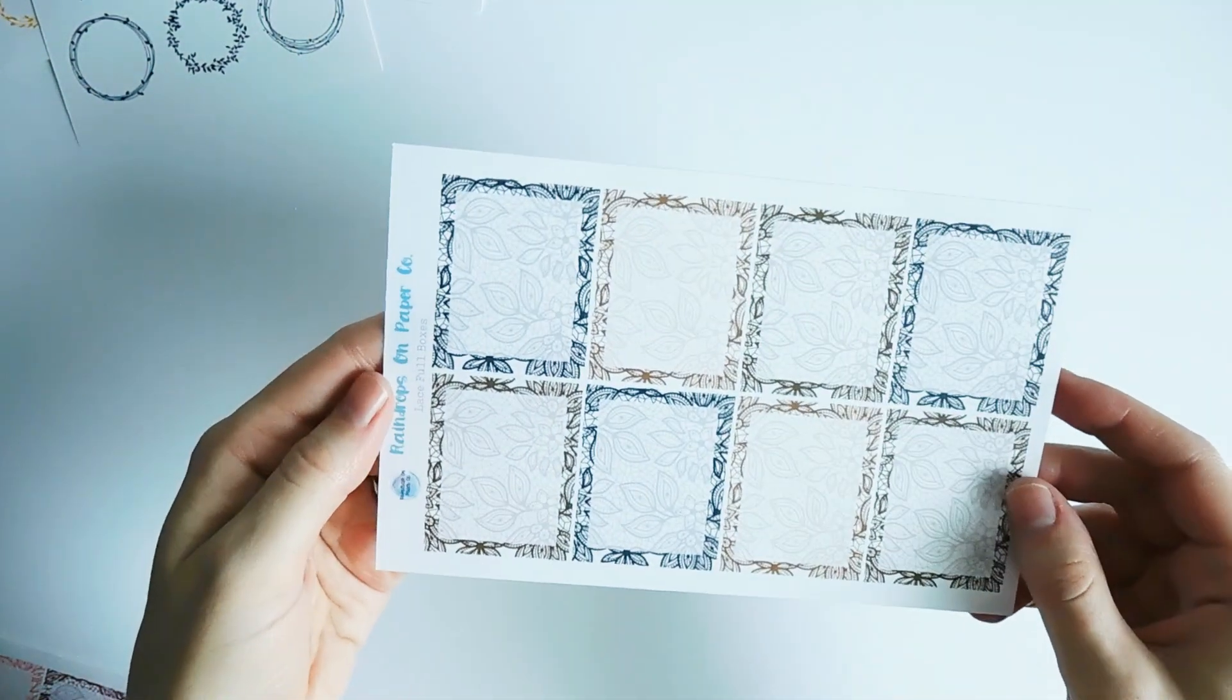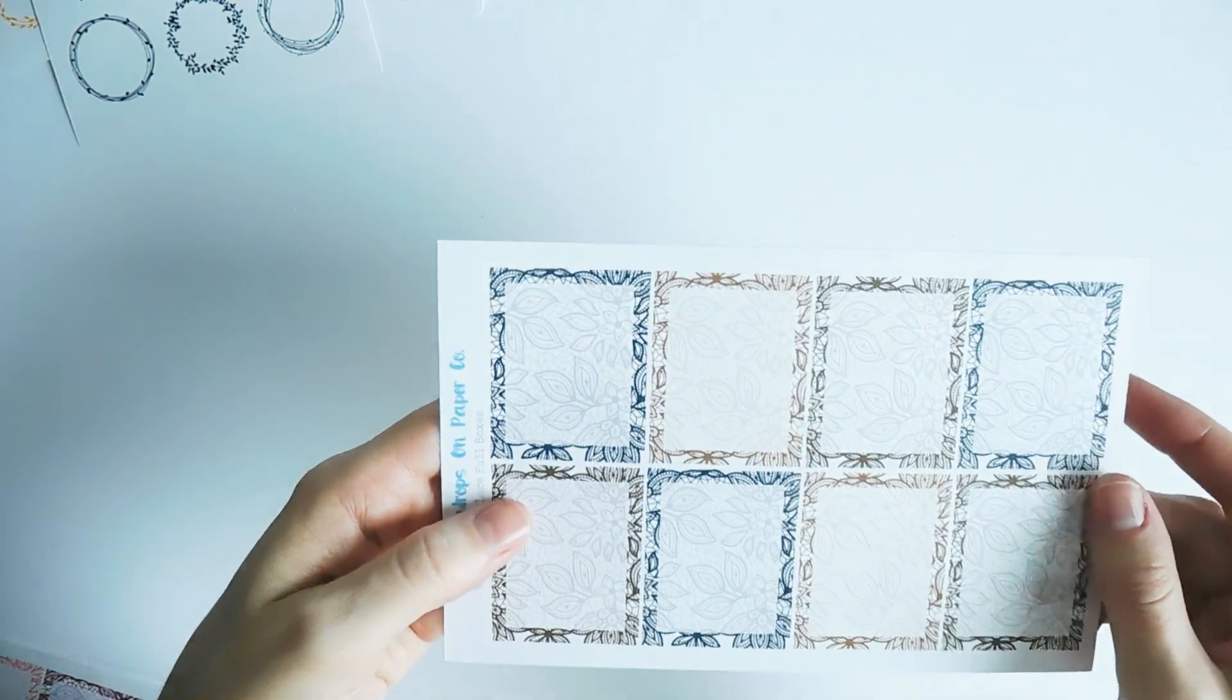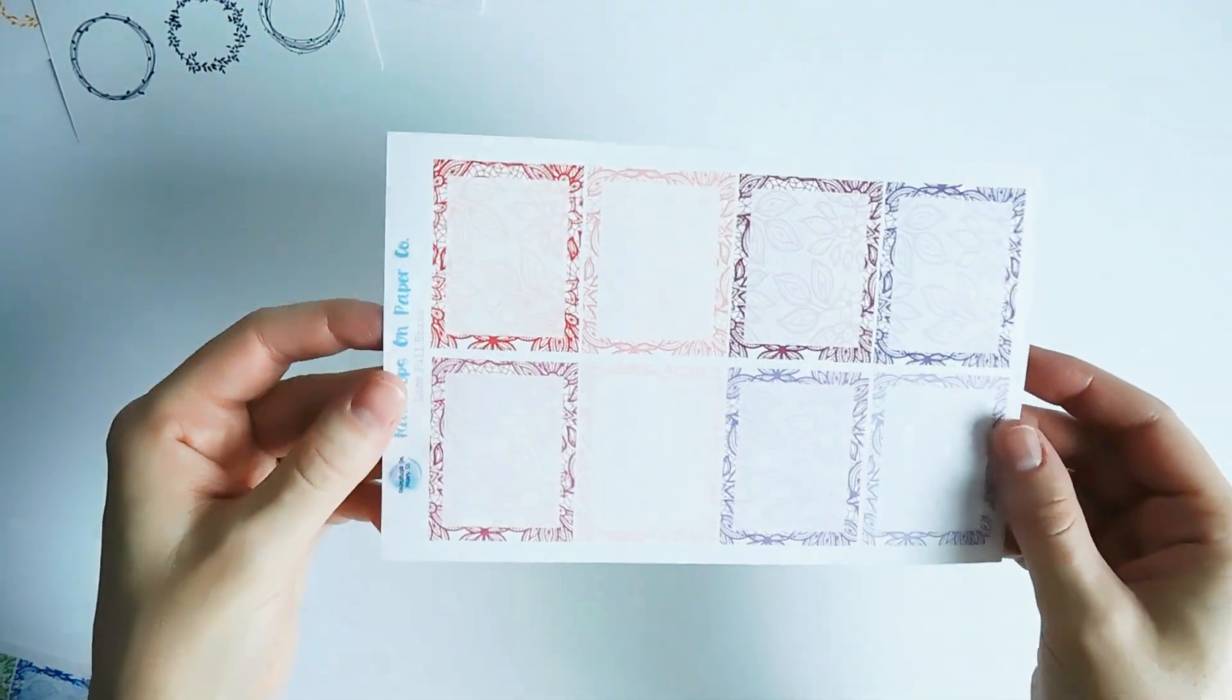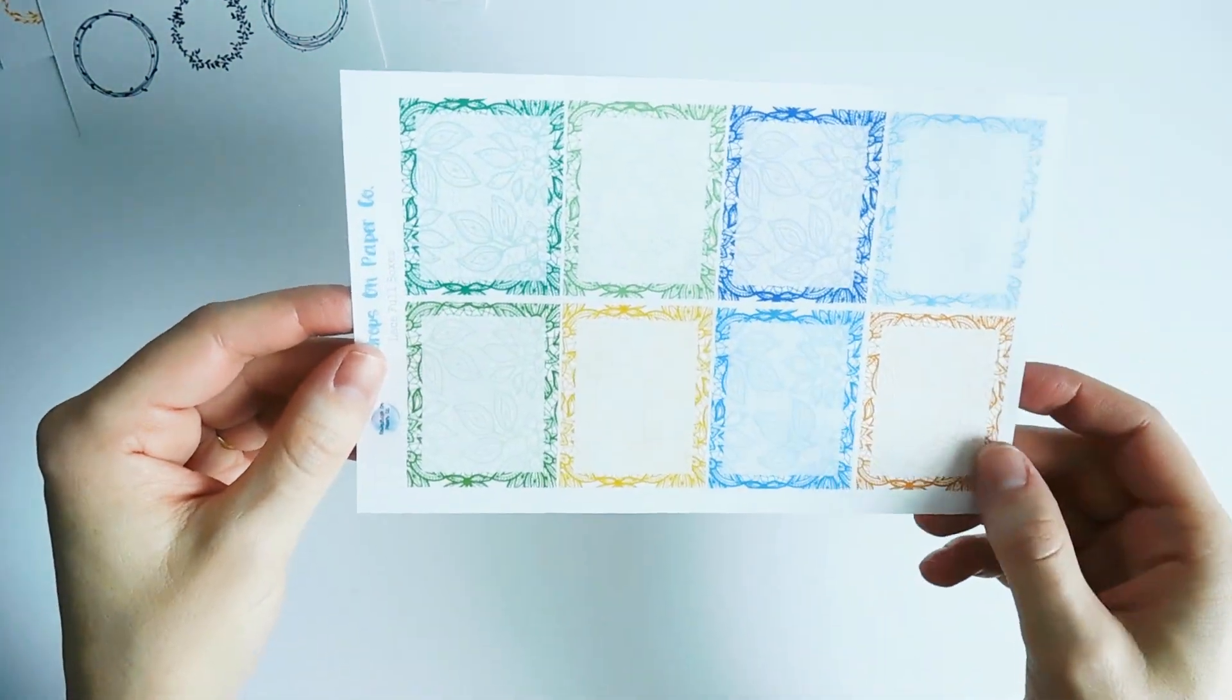Then these are lace full boxes, so they have a lace background. These are the neutral colors and the reds, pinks, and purples, and then here are the greens, blues, orange, and yellow.